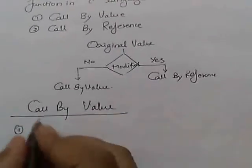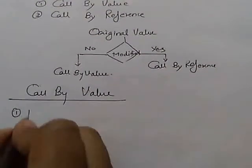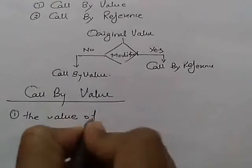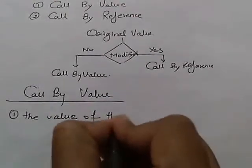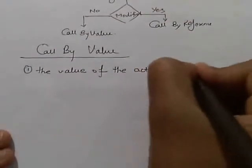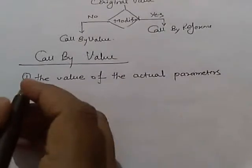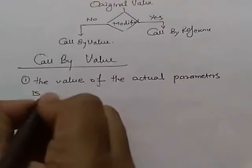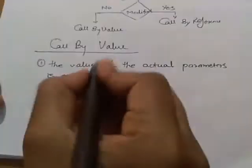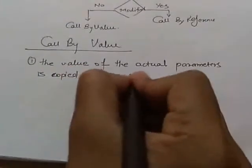Point number one: In call by value method, the value of the actual parameter is copied into the formal parameter.